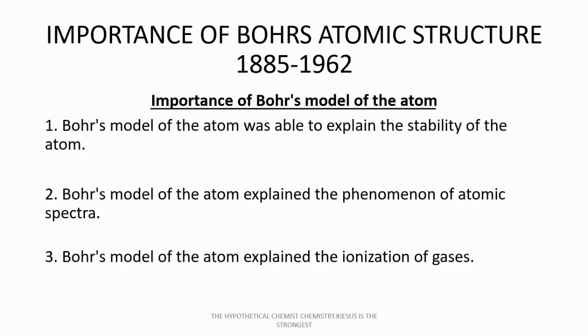The second point is that Bohr's model of the atom explained the phenomenon of atomic spectra. As I mentioned, we learned from emission spectra that we have continuous and line spectrum. This came about because anytime an element — whether in elemental form or in compound form — gains much energy, it begins to emit vapor, and that vapor will glow. That is what is termed atomic spectra, and we have the line and continuous spectrum.